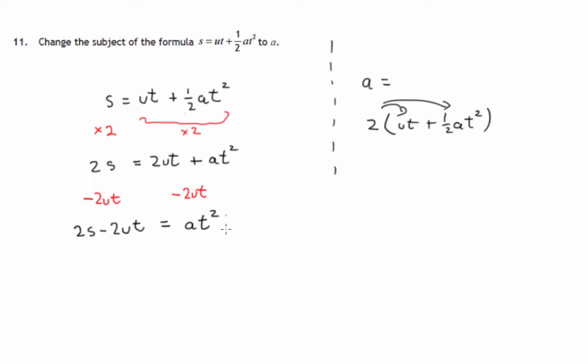I'm now looking at times T squared, thinking what's the opposite of multiplying by T squared? Well, it's dividing by T squared. So both sides of this equation, that's the whole of this, gets divided by T squared. And all of this gets divided by T squared.